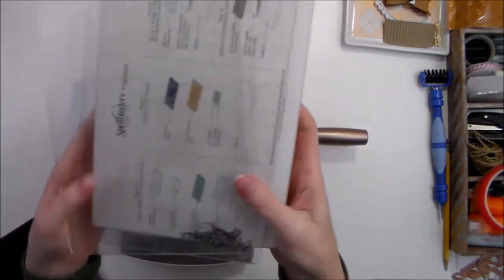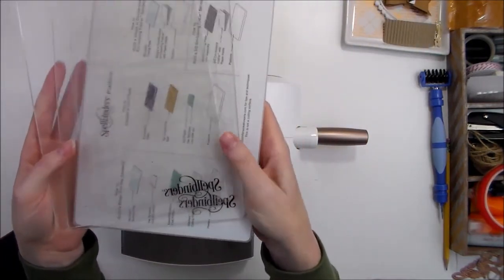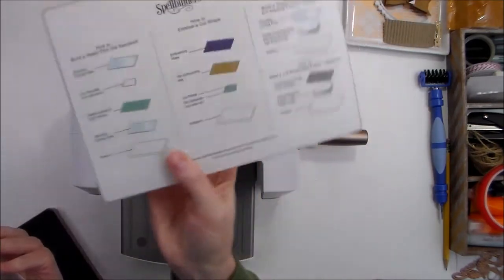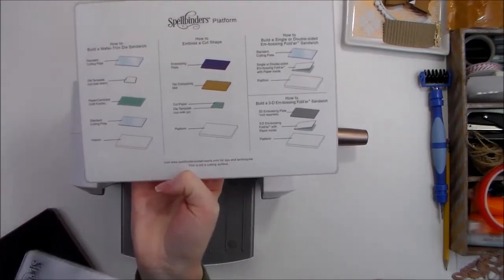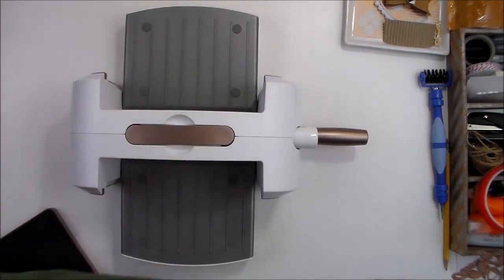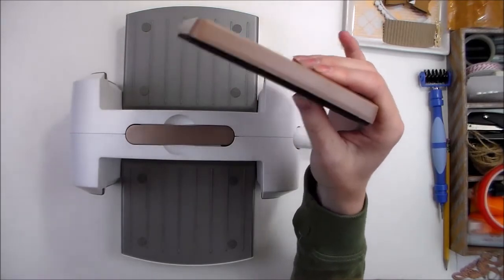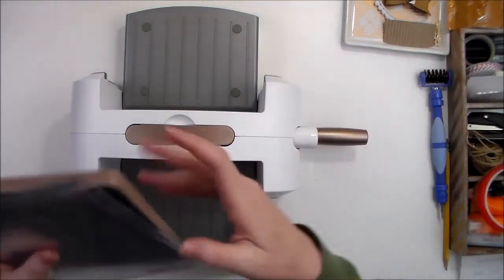So when you get the Platinum 6 machine, like most die cutting machines, it comes with three plates. There's this heavier white plastic plate that gives you all of the instructions on what kind of sandwich you need to build. You don't need this one though if you're using these thicker steel roll dies. You only need that if you're using the wafer thin or etched dies.